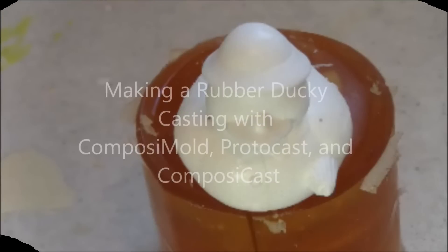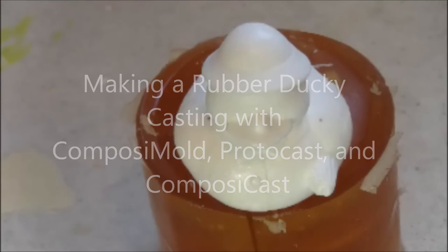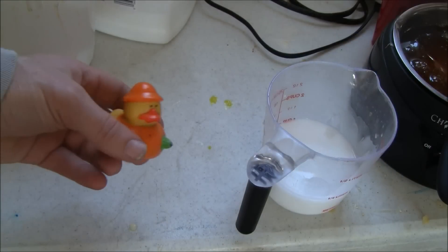To mold and cast a rubber ducky into a plastic duck using Protocast and ComposiCast urethane resin. This is a simple one-part mold of a rubber duck.